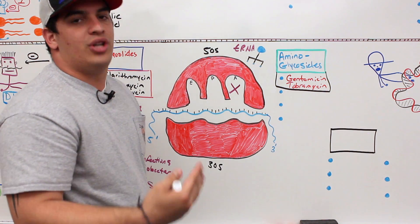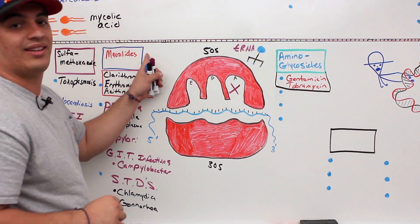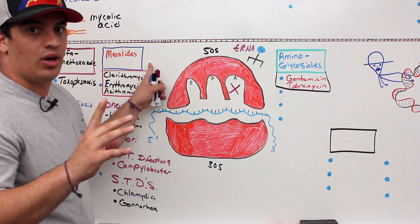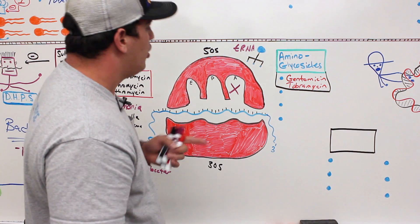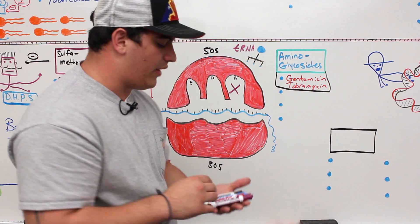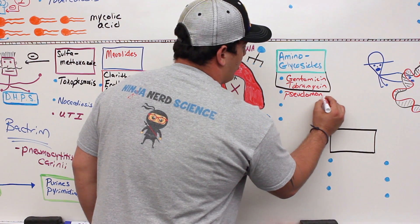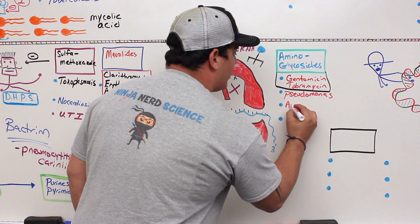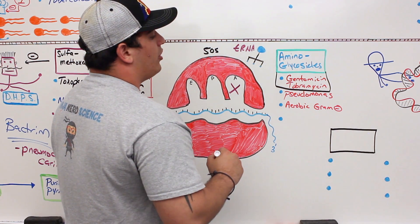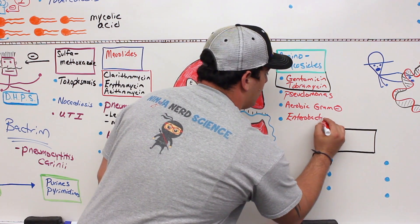Aminoglycosides like gentamicin and tobramycin are actually bactericidal, whereas macrolides are bacteriostatic — aminoglycosides directly cause cell death. They mainly treat gram negative bacteria, particularly pseudomonas and other aerobic gram negative bacteria.